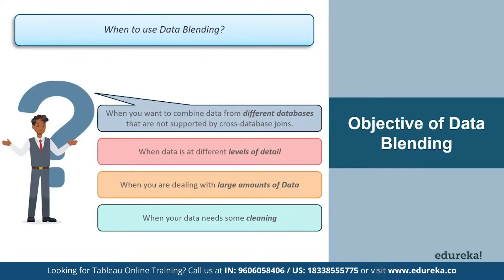The next condition is when you have data at different levels of detail. Sometimes one data set captures data using greater or lesser granularity than the other. For example, suppose you are analyzing transactional data and quota data. Your transactional data might capture all transactions; however, quota data might aggregate transactions at a quarter level. Because the transactional values are captured at a different level of detail in each data set, you should use data blending to combine the data.